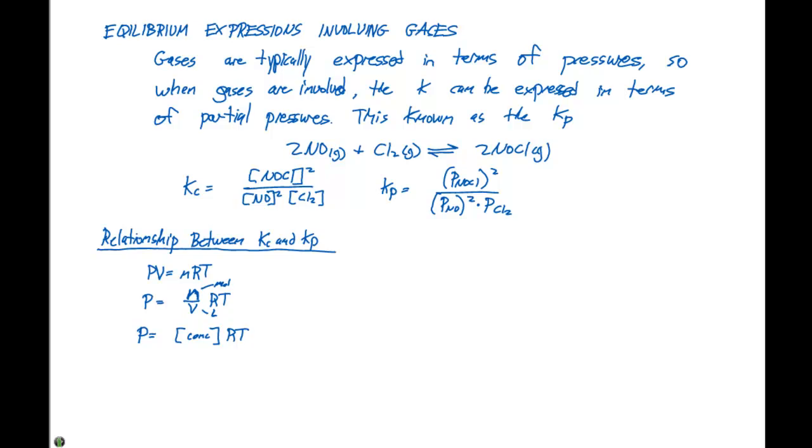We can express Kp in terms of partial pressure. We can express Kp in terms of concentration. Here, we then can multiply this by RT, and the relationship here happens to be between the delta N, or the difference in the number of moles, and this delta N is going to be the difference in stoichiometry of gaseous reactants and products.